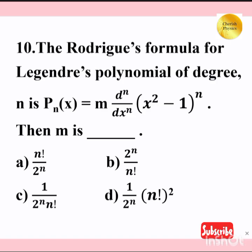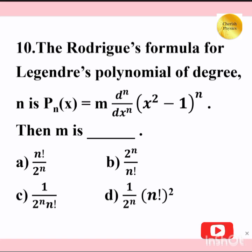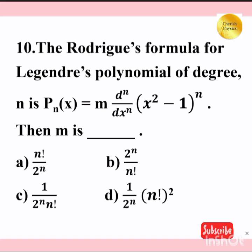The Rodrigues formula for Legendre's polynomial of degree n is: Pn(x) = M · (d^n / dx^n)(x² − 1)^n. Then M is equal to — [blank].